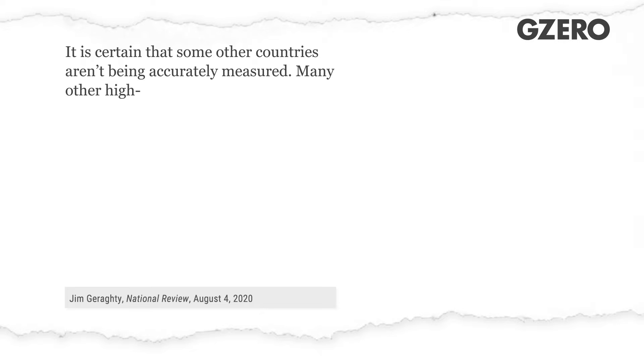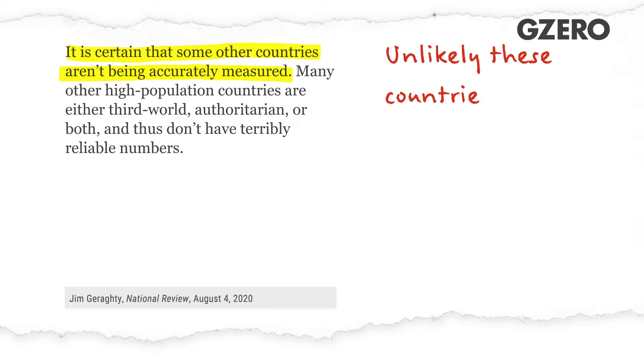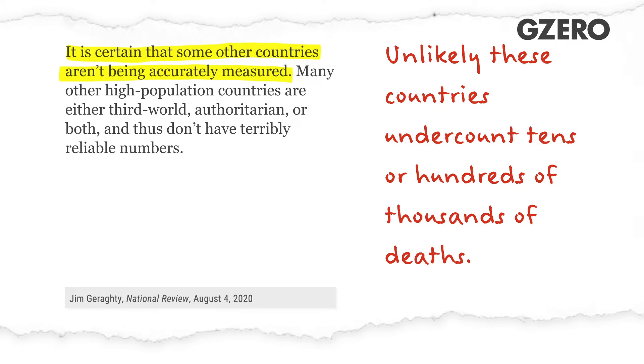First, Geraghty argues that coronavirus data from other countries are greatly underreported and that their actual deaths per capita might be as high or higher than the United States. He cites Indonesia, China, Russia, and Bangladesh. It's safe to say that pretty much every country in the world is undercounting COVID case rates and death rates for a variety of factors like insufficient testing and plain old corruption. And the United States, no doubt, is undercounting too. But let's do the math.